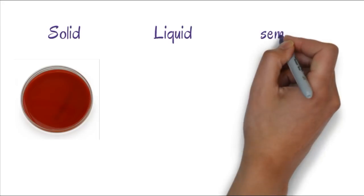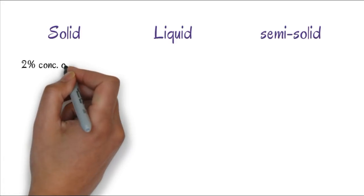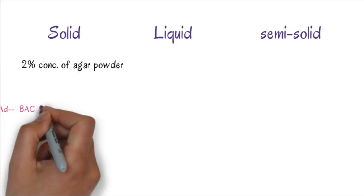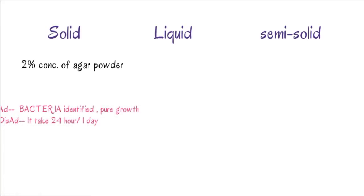Based on concentration of agar, we have solid, liquid, and semi-solid. Solid media contains 2% concentration of agar powder. The advantage is that bacteria are identified easily because it produces pure growth. The disadvantage is it takes more time, 24 hours to one day. Examples are blood agar and chocolate agar.